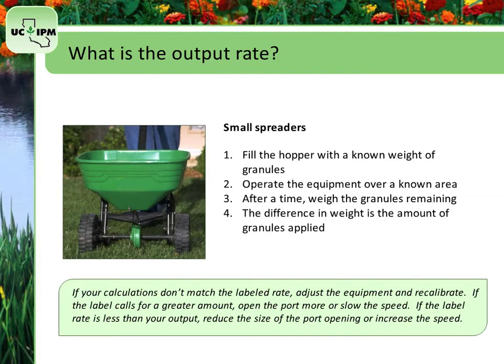Motorized and hand-operated applicators apply granules at a fixed output rate, independent of ground speed. If the label calls for a greater amount, you need to open the port more or slow the speed of travel. If the label rate is less than your output, close the port slightly or increase the speed. Once you make an adjustment, repeat the calibration procedure until the correct output rate is reached.